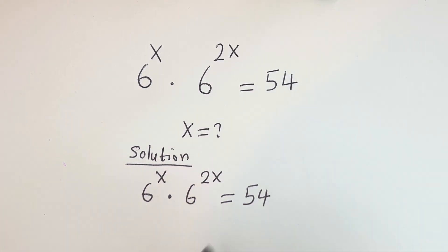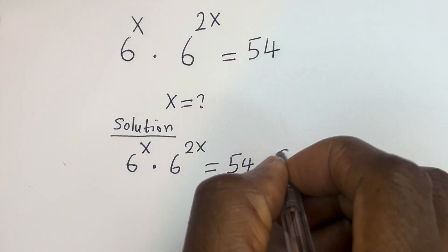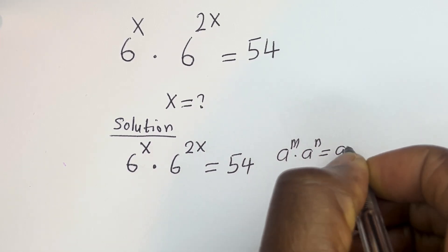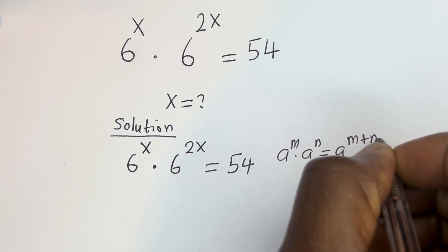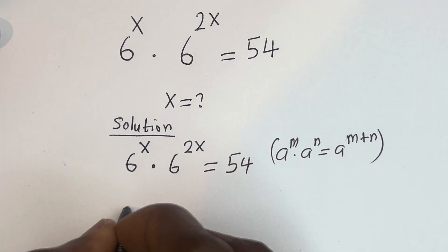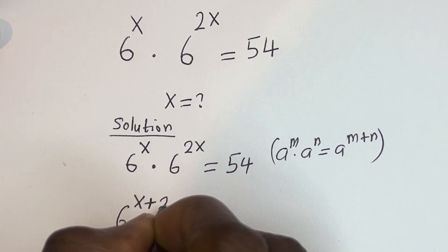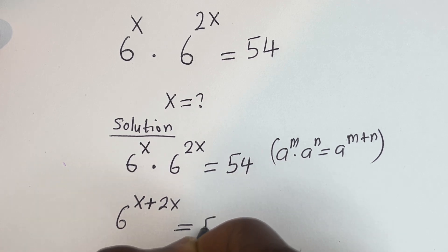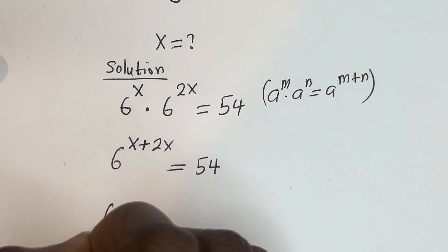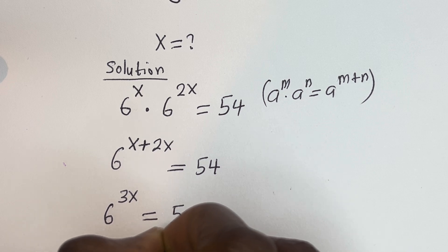Take note that if you have a to the power of m multiplied by a to the power of n, this is equal to a to the power of m plus n. Then this can be written as 6 to the power of s plus 2x, which gives us 6 to the power of 3x is equal to 54.